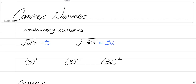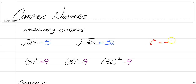We know that everything squared is positive. So positive 3 squared is equal to 9, and negative 3 squared is also equal to 9. But 3i squared: 3 squared is 9, but i squared is negative 1. So 3i squared is actually negative 9, and that's because if you square root a negative and get i, that means i squared is equal to negative 1.